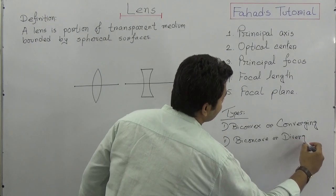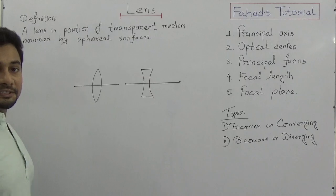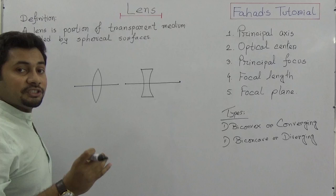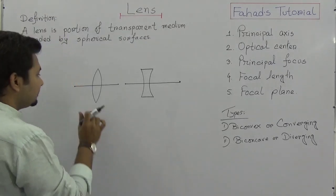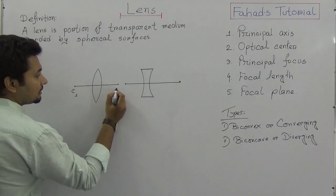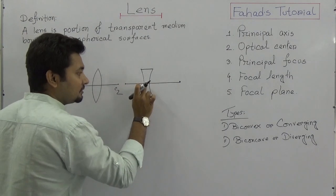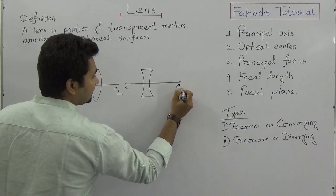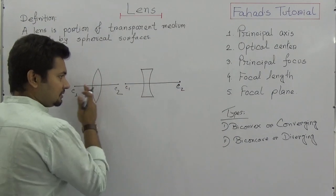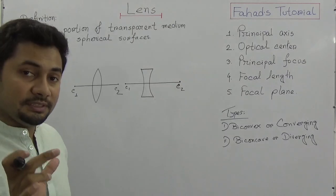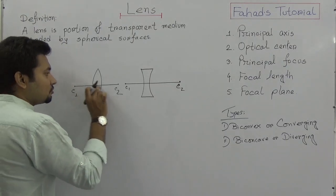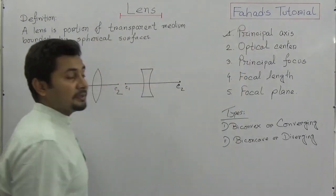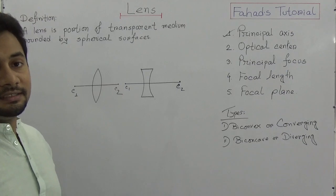Why is one called diverging and the other converging? I will come up with these definitions, which are essential to understand properly. We have C1 and C2 as centers of curvature — though I am drawing them separately. In both cases we have two centers of curvature, and when we join these centers of curvature we get a line which is the principal axis of the lens.